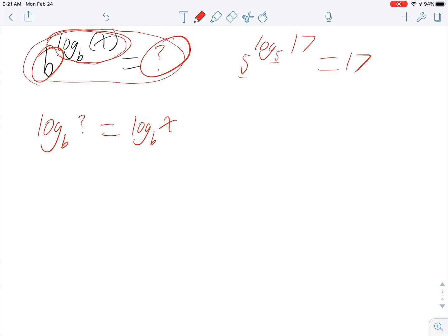And so rewriting it in log form, we see log base b of what equals log base b of x. And obviously the answer is x. They have to be the same thing in order to make these two sides identical.